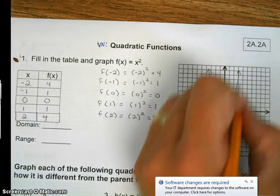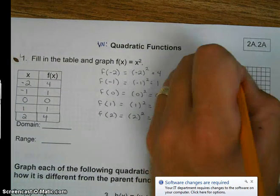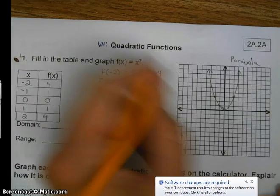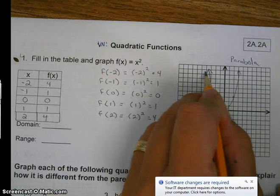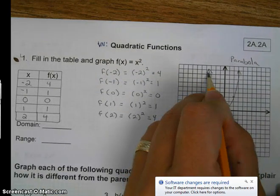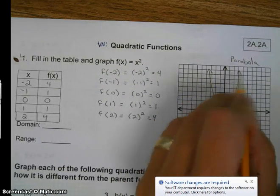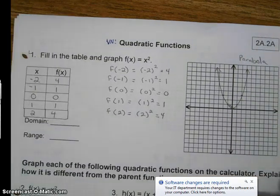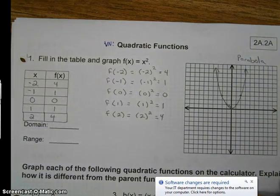It's curving both directions. Remember that this shape is called a parabola. Notice I put arrows on the ends because they continue going infinitely to the left and up, and infinitely to the right and up.